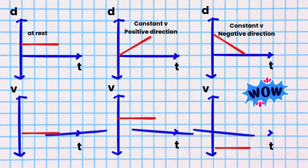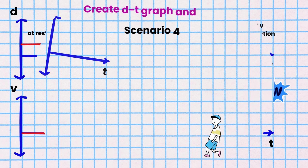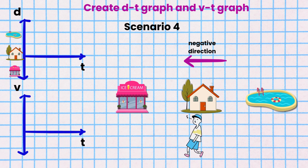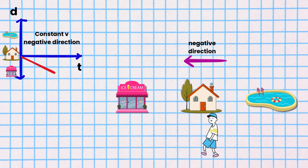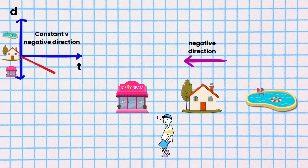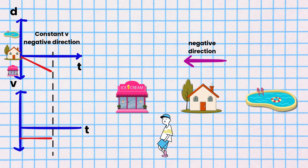Here are our first set of 3 DT graphs and their matching VT graphs. Scenario 4. Isaac is walking from his home to the ice cream shop at a constant velocity. The DT graph is a straight line with a negative slope since he is walking in the negative direction. The VT graph would be a horizontal line at the appropriate velocity value in the negative quadrant below the time axis.